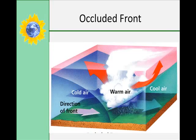Occluded fronts happen when a warm air mass is caught between two cooler air masses. Cold air mass number one moves in and pushes the warm air mass upward. Then cold air mass number two moves in and pushes both the warm air mass and cold air mass number one upward. The warm air mass is completely cut off from contact with the ground — it has been blocked — and that is where the term 'occluded' comes from.